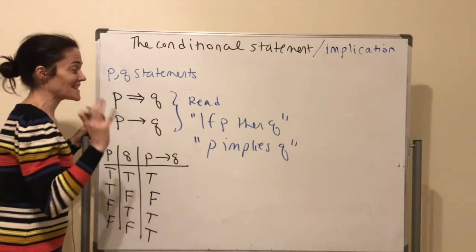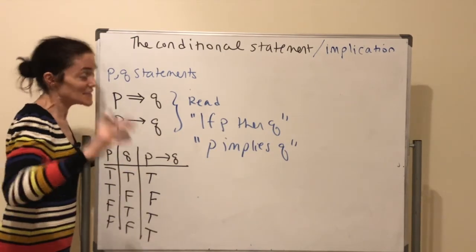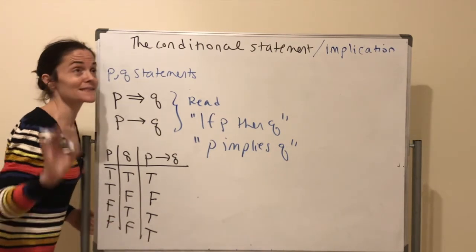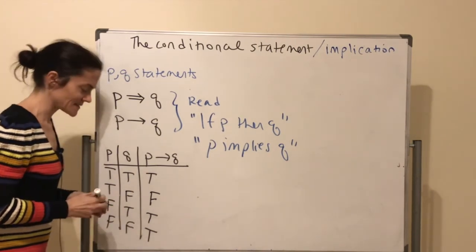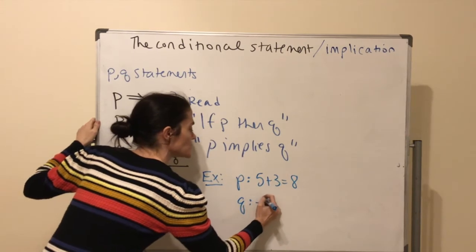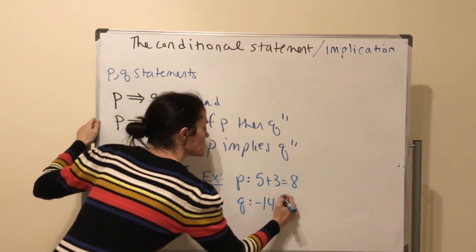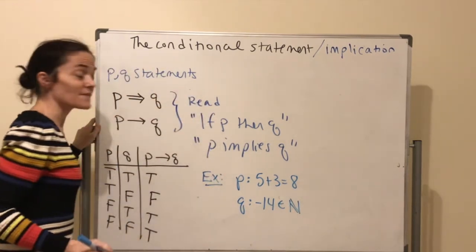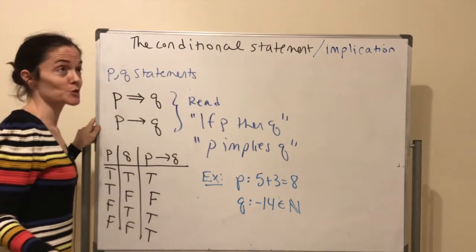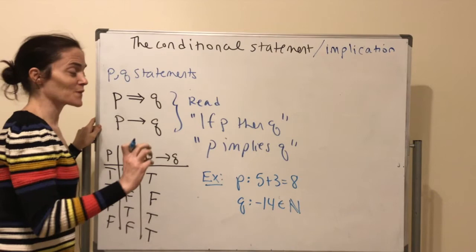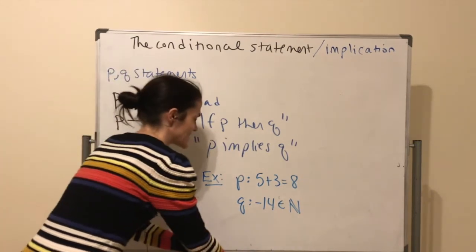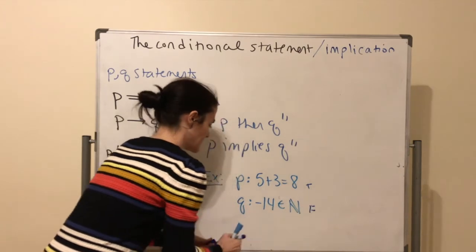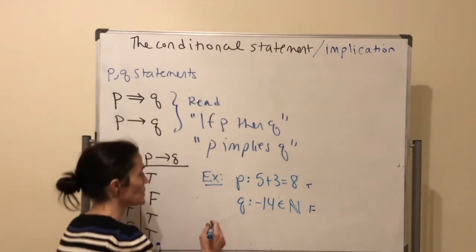Going back to our earlier example: p is '5 + 3 = 8' (true) and q is '−14 ∈ ℕ' (false). Then p → q is false, because p is true and q is false. But q → p is true, because q is false, and any implication with a false hypothesis is true.